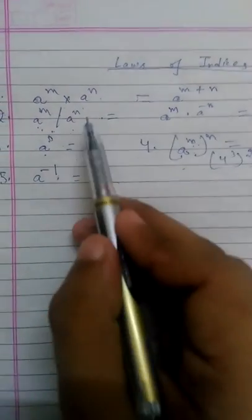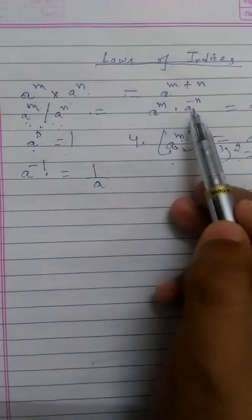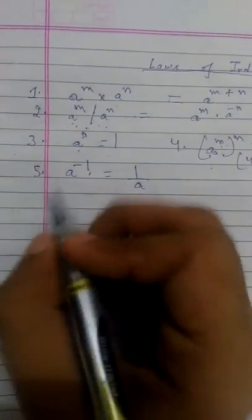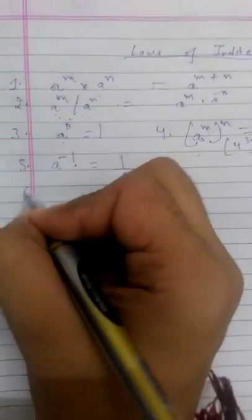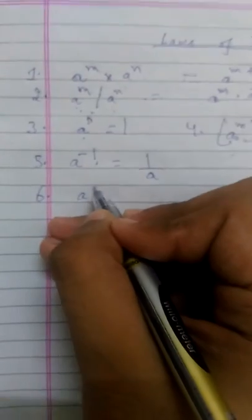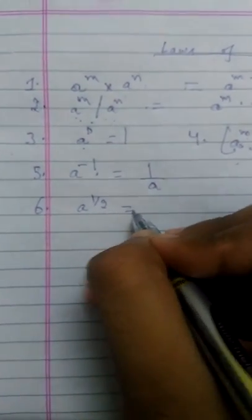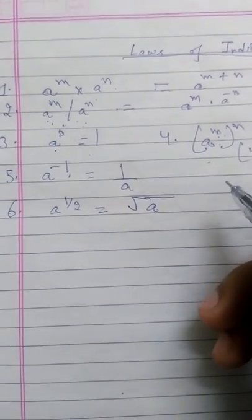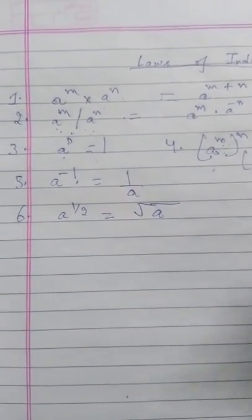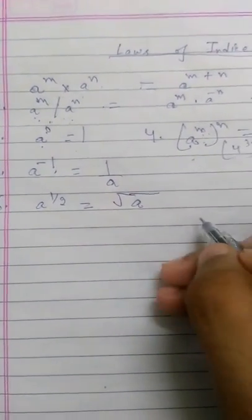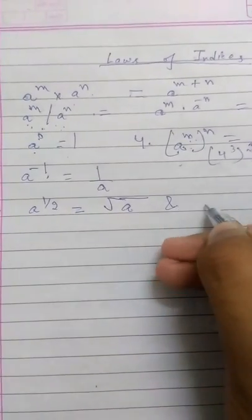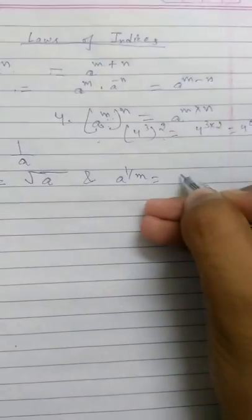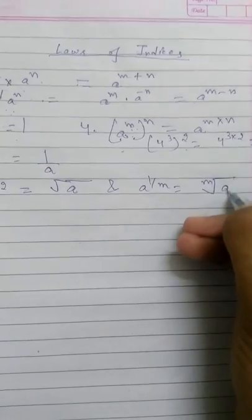The fifth law is: a raised to the power minus 1 equals 1 divided by a. Using this formula, a to the power minus n equals 1 by a to the n. Also, a raised to the power 1 by 2 is the square root of a. Similarly, a raised to the power 1 by m equals the m-th root of a.